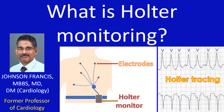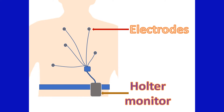Ambulatory ECG or Holter Monitoring. A usual ECG is recorded over a short period of time, typically within 1 minute. Certain abnormalities which can be detected by ECG may not occur during this short recording period. Heart rhythm disorders which are intermittent may not be recorded on the clinic ECG. Some ECG changes may occur only during certain activities and can never be recorded in an ECG taken while lying down in the ECG room. The solution is Ambulatory ECG or Holter Monitoring.